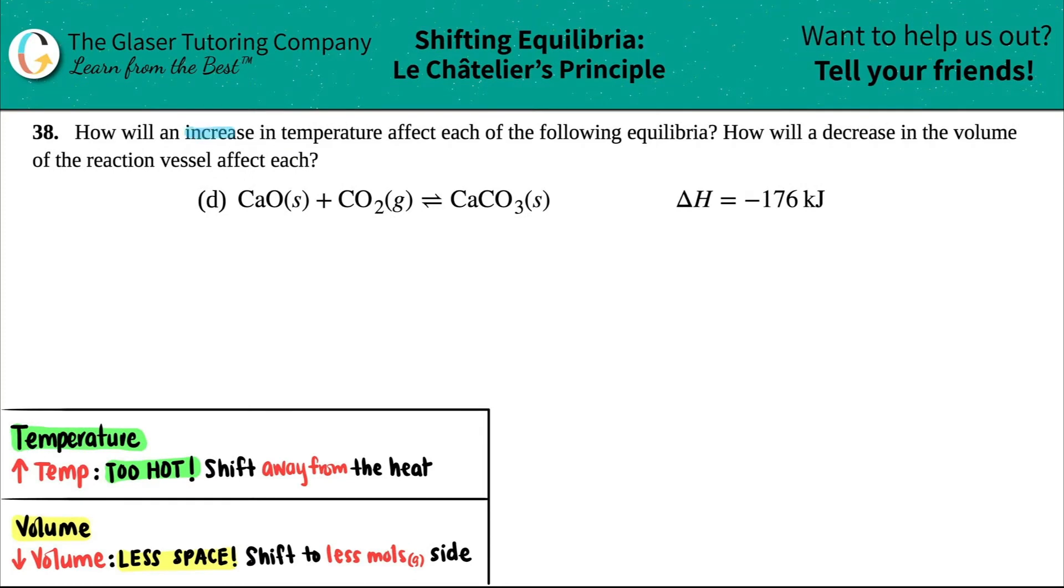Number 38: How will an increase in temperature affect each of the following equilibria, and how will a decrease in the volume of the reaction vessel affect each? We have letter D. First, I'm going to write this bigger so we can work with it. I've got calcium oxide CaO as a solid, plus CO2 as a gas (carbon dioxide), and this comes to equilibrium with calcium carbonate CaCO3 as a solid.